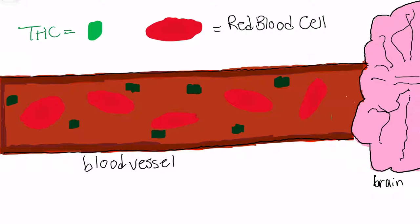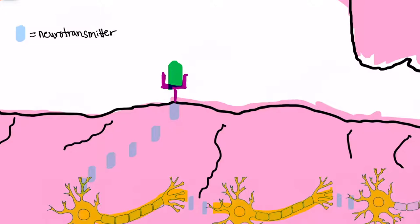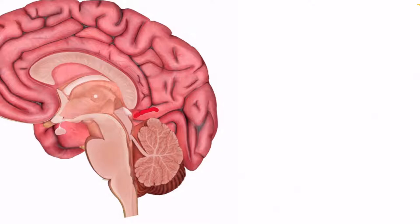After consumption, THC enters your bloodstream and makes its way to the brain. It then binds to receptors in the brain called cannabinoid receptors. This causes a release of neurotransmitters, which are chemicals that signal the brain. The neurotransmitters activated help regulate mood, sleep, memory, and appetite.